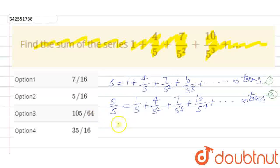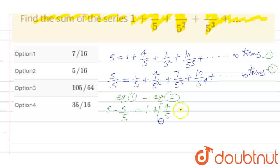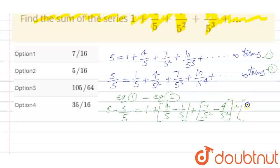Suppose this is equation 1 and this is equation 2. We subtract equation 1 minus equation 2, so we get S - S/5 = 1 + (4/5 - 1/5) + (7/5² - 4/5²) + (10/5³ - 7/5³) and so on.